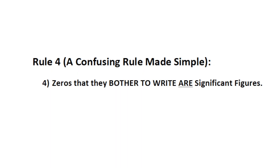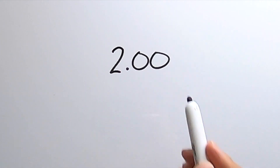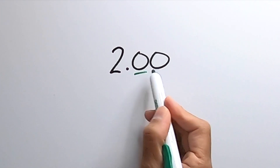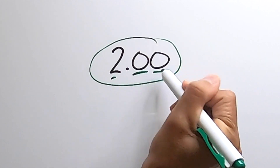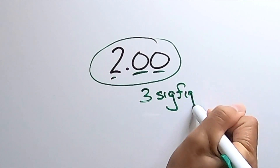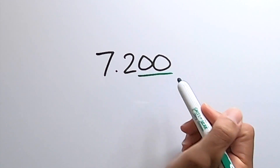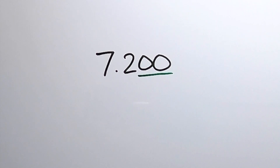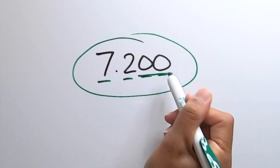Rule number four: zeros that they bother to write are considered significant figures. So if you see something like 2.00, they didn't have to write these zeros, but they bothered to write them in the word problem, which means you will bother to show them in your answer. So the number 2.00 has three sig figs. Or what about 7.200? These zeros did not have to be written, but they bothered to write them, which means you will count them as significant figures. So 7.200 has four significant figures.